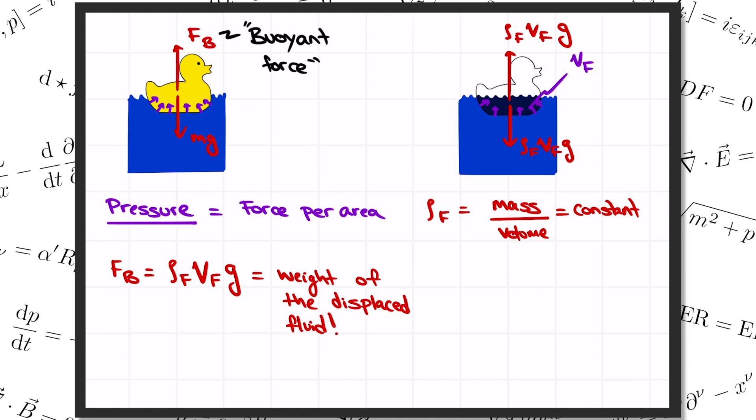As we expected, the buoyant force gets bigger if you force the object deeper down under the surface, because F is proportional to the volume V of the object under the surface. And we also see that the denser the fluid is, the bigger the buoyant force is going to be.